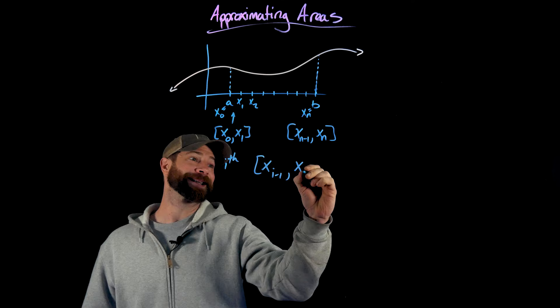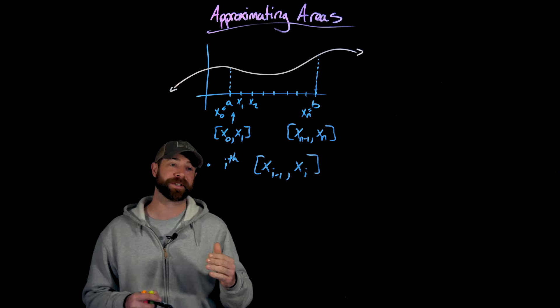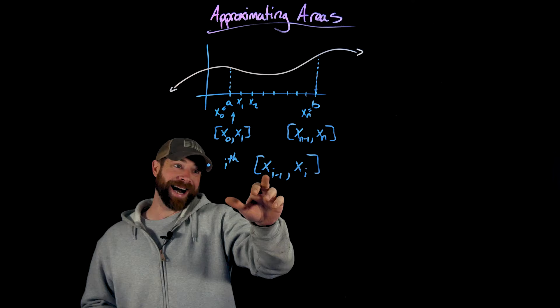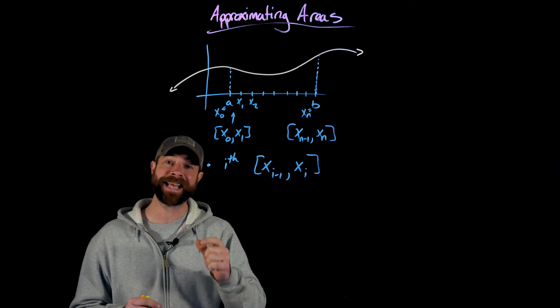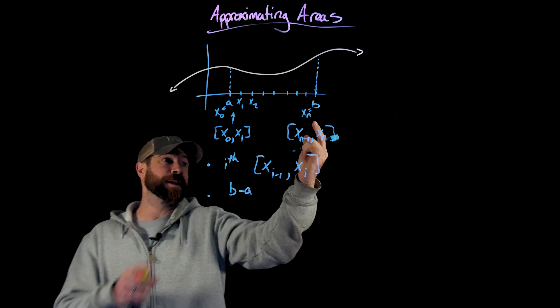This is really important for what we're going to define next as far as our approximation strategies. The ith interval ends with X sub I and starts with X sub I-minus-one. Also very important: if we take this interval AB and split it into N equal intervals, each interval will have the same width. That width is calculated by taking B minus A — the length of the entire interval — and dividing it by N. We'll denote this delta X, the change in X for every interval.